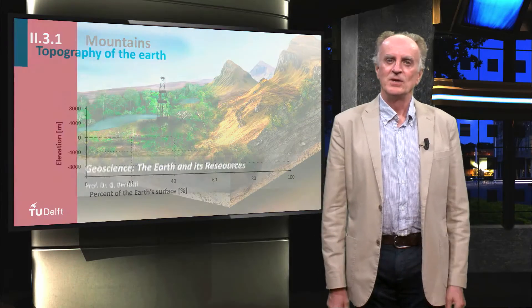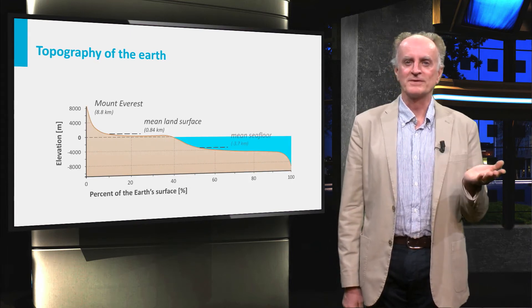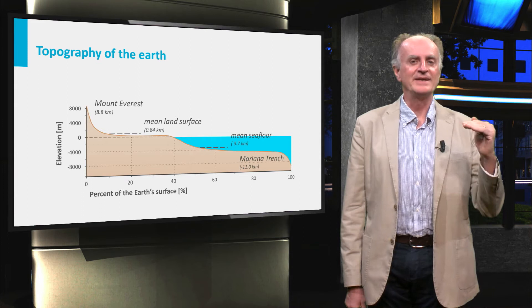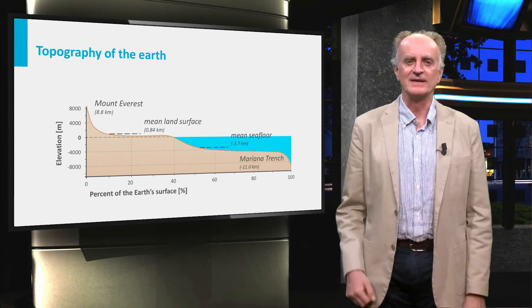Welcome back! You have seen this diagram before. It shows that most of the surface of the Earth is either at 800 meters or at around 3.7 kilometers underneath sea level.